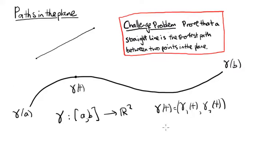So we can actually think of this function, or this map, from the interval to the plane as a pair of functions. Gamma 1, gamma 2, each sending the interval just to the real line.